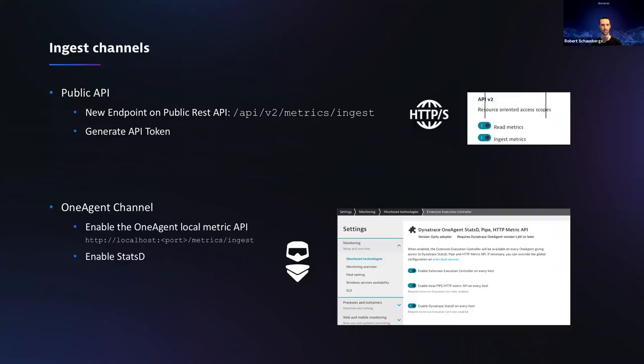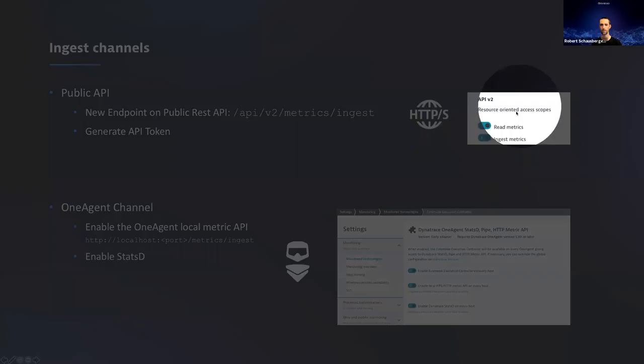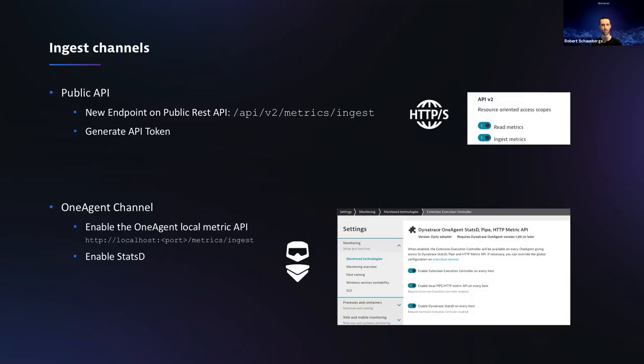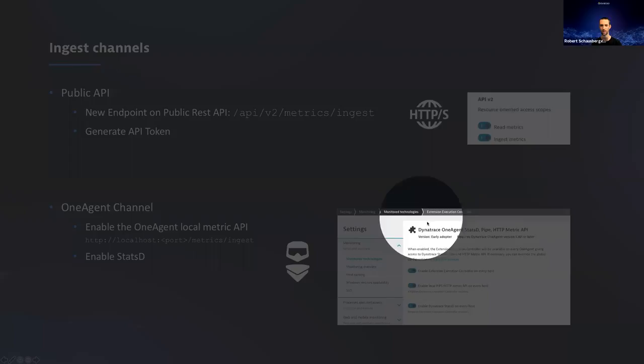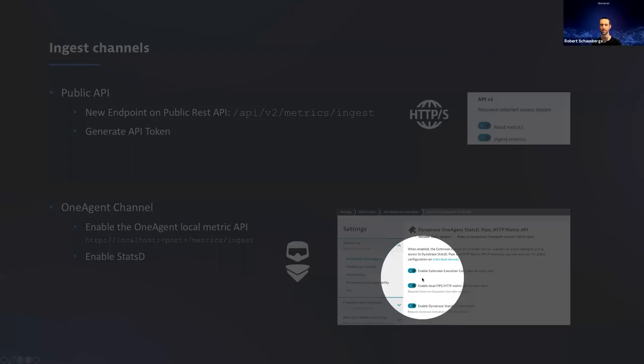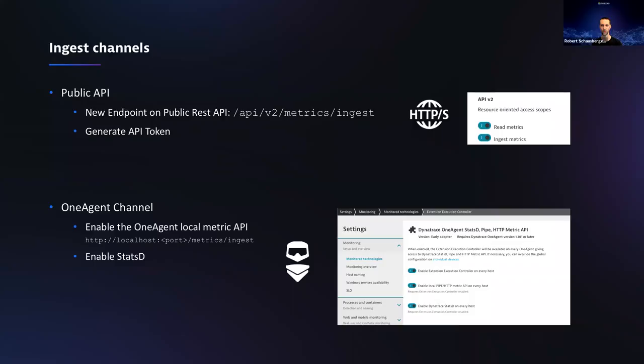To wrap up the two different ingest channels: they've been deployed since version 202, starting in September, on the public API endpoint. If you want to leverage it, all you need is to generate an API token and toggle on the new 'Ingest Metrics' setting. If you already have a OneAgent deployed at version 202 or later, you just need to activate the integration called 'Dynatrace OneAgent pipe or HTTP metric' in the settings.